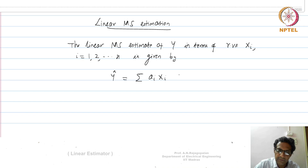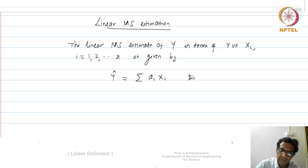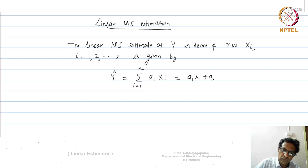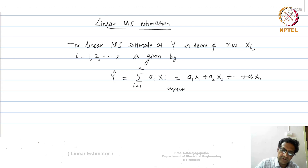In general you can also have a constant b to make it an affine estimator, but I will take a simpler case. So ŷ = a₁x₁ + a₂x₂ + ... + aₙxₙ, where aᵢ are all constants, which is why this is called a linear estimator.